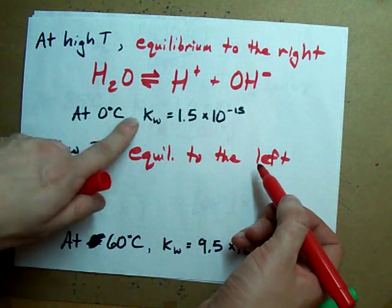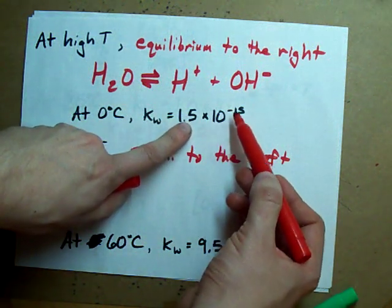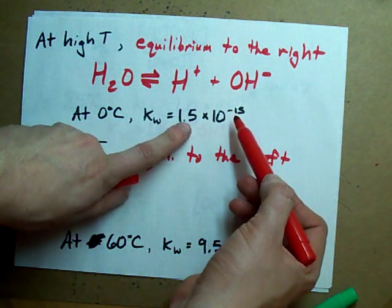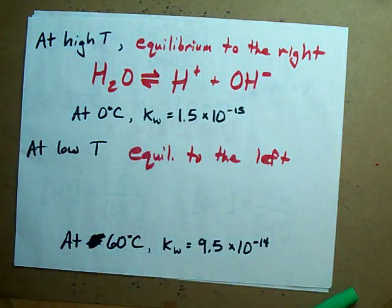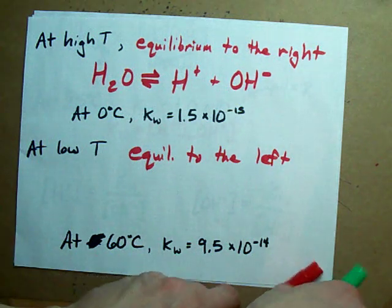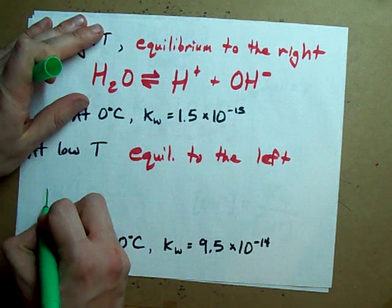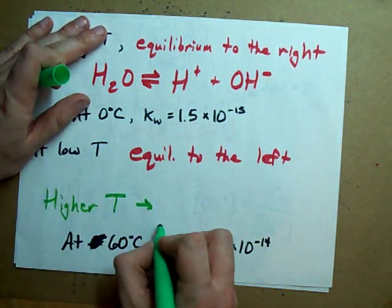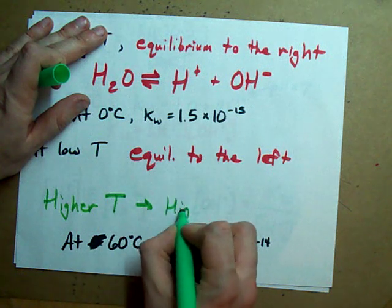At zero degrees Celsius, Kw is almost a tenth, actually closer to a sixth of what it is at 25 degrees Celsius. So, what I'm saying really is that higher temperature leads to a higher Kw.